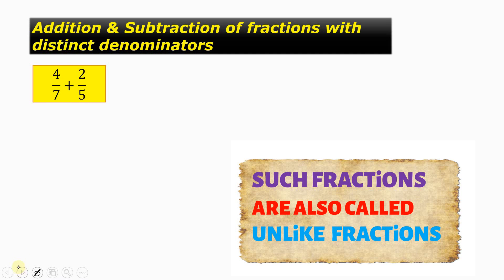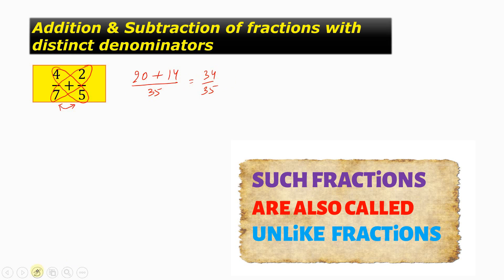The first question is 4/7 plus 2/5. What we do is we write 4 into 5, that is 20, plus 2 into 7, that is 14, divided by 7 into 5, that is 35. So the answer will come out to be 34 by 35.